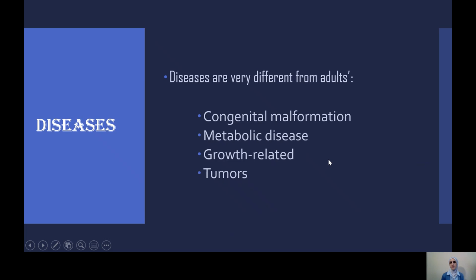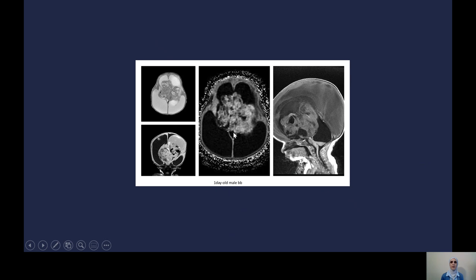The diseases we encounter in pediatric radiology are very different from adults. You will see congenital malformations, metabolic diseases, growth-related changes, and normal variants — you have to be vigilant not to call a normal ossification center or accessory bone a fracture. Tumors are different too, with specific entities not seen in adults and different prognoses. For example, this is a congenital teratoma in a one-day-old baby, with massive associated hydrocephalus.